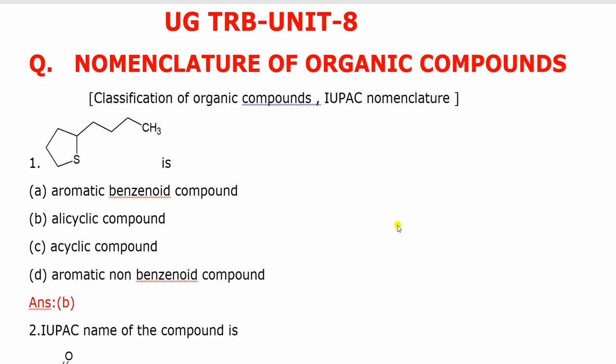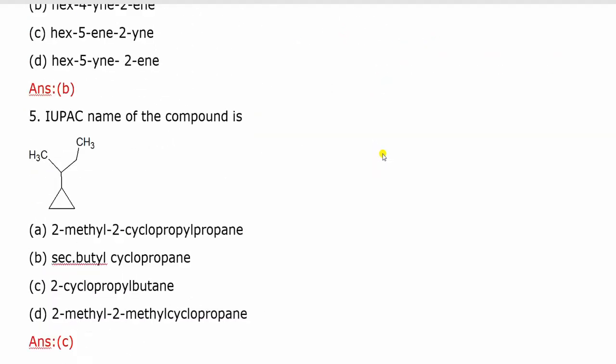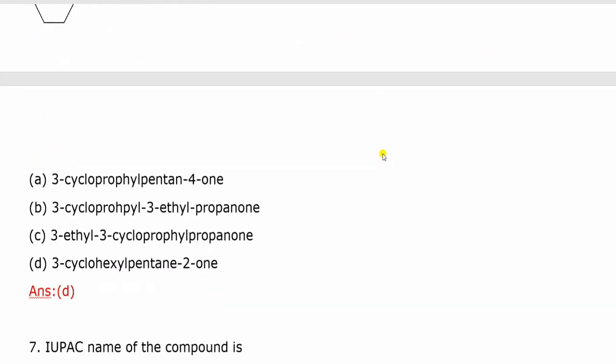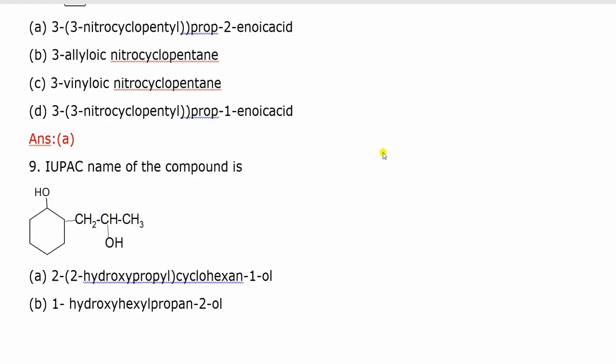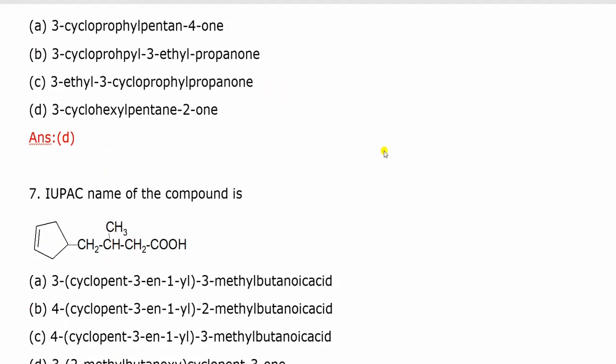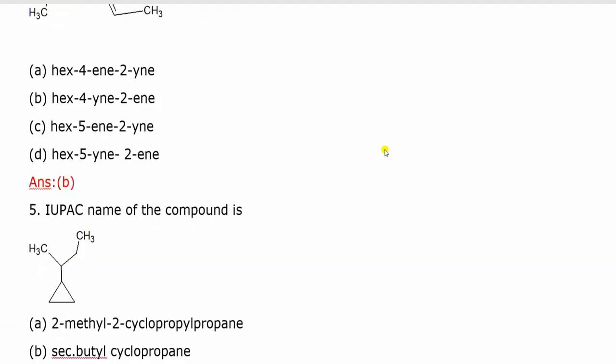Hello viewers, welcome to my guest chemistry classes. In the presentation, UGT-IRB unit number 8, organic chemistry, I would have a topic of questions for them. First, the nomenclature of organic compounds under classification. In the area of IUPAC nomenclature and the classification of compounds in MCQs discussion.